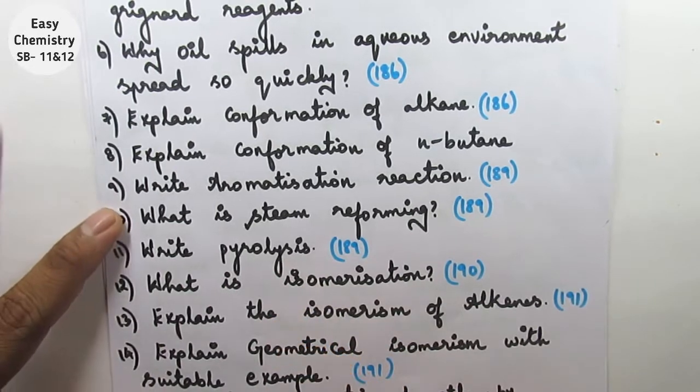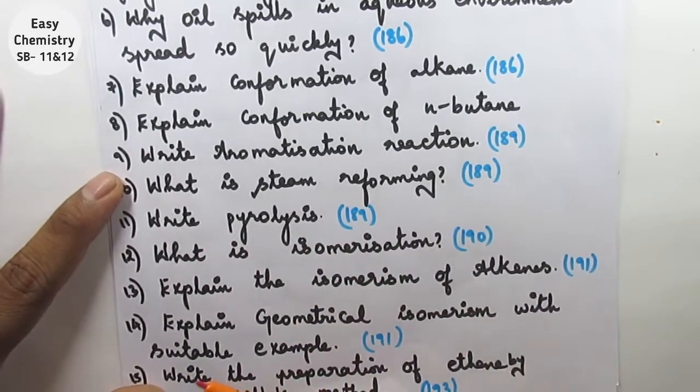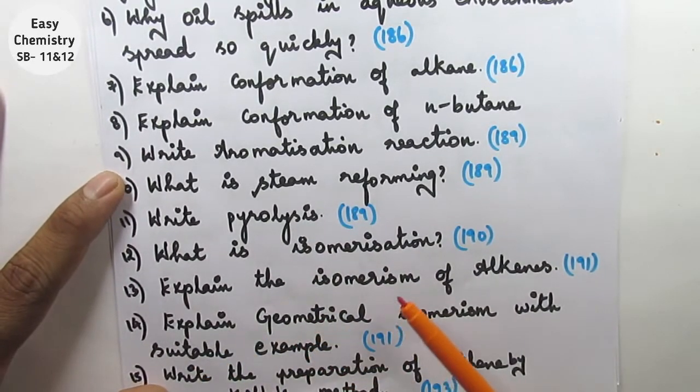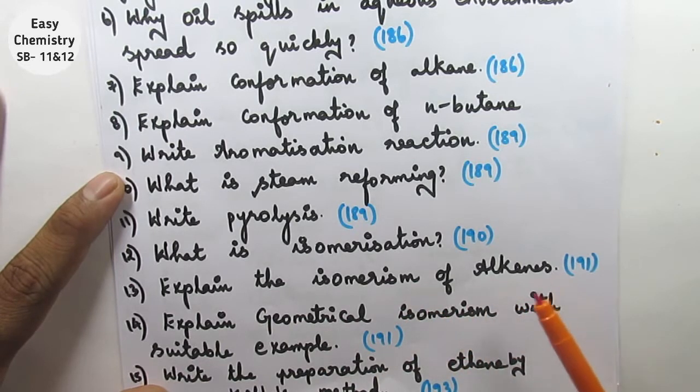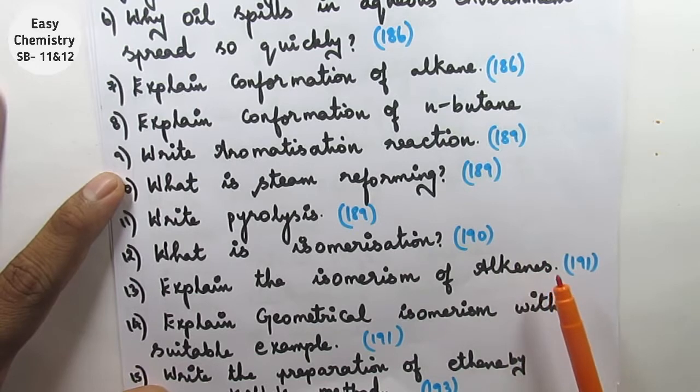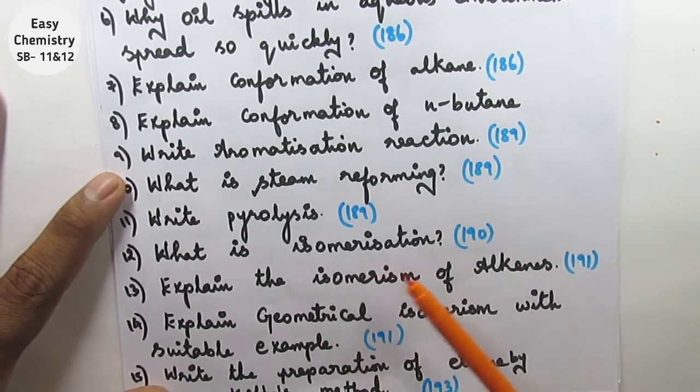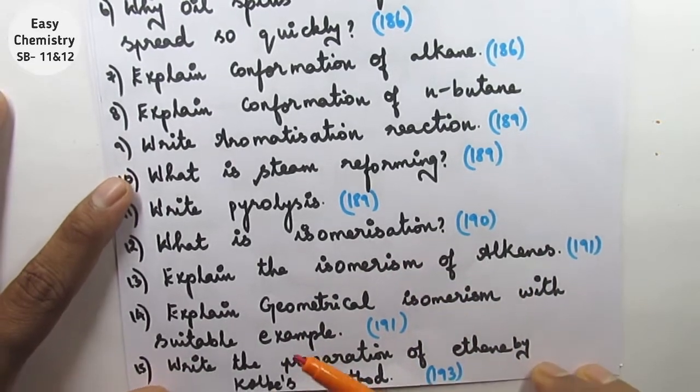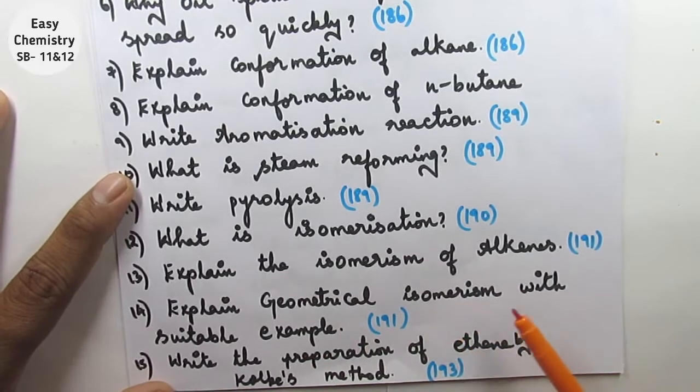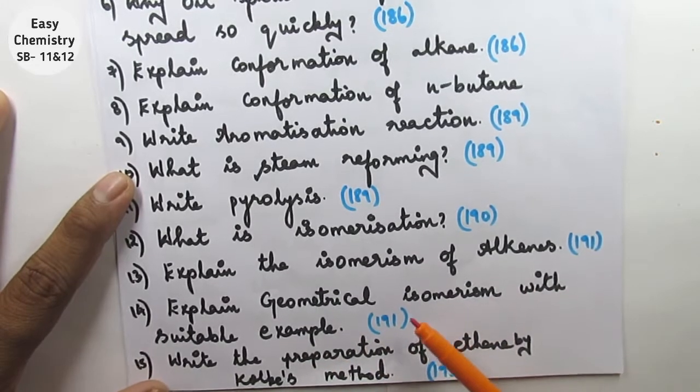Isomerism of alkanes. Question number 14: Explain geometrical alkanes with suitable example, page number 191. Write the preparation of ethene by Kolbe's method.